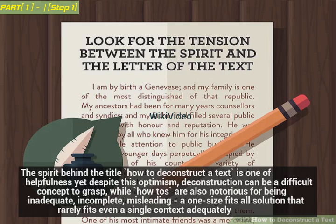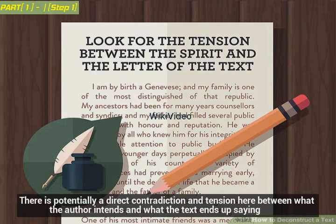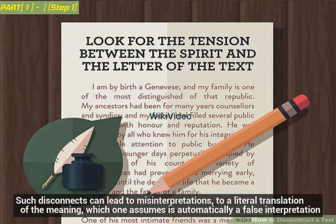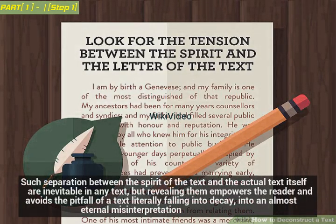How-to articles are also notorious for being inadequate, incomplete, misleading — a one-size-fits-all solution that rarely fits even a single context adequately. There is potentially a direct contradiction and tension between what the author intends and what the text ends up saying. Such disconnects can lead to misinterpretations, to a literal translation of the meaning, which one assumes is automatically a false interpretation. Revealing these separations between spirit and text empowers the reader and avoids the pitfall of a text falling into an almost eternal misinterpretation.